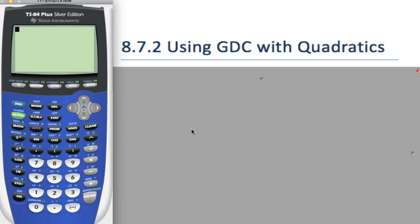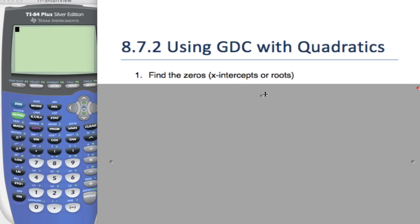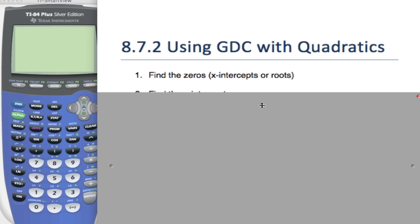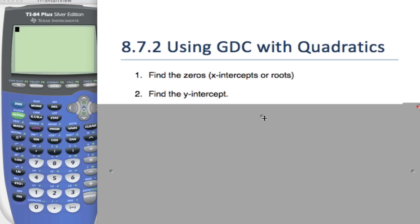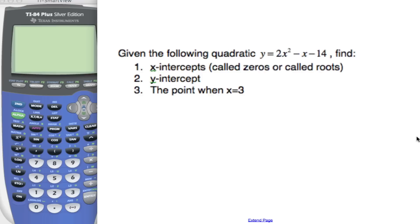Hey, it's Mr. Raps, Mr. Coe, and Mr. Murphy. We're doing part two of GDC's little quadratics, and in this particular video you are going to learn about finding the zeros — or the x-intercepts, or the roots — three words to mean the exact same thing. And find the y-intercept, and then find a point on the curve. So let's get right to it.